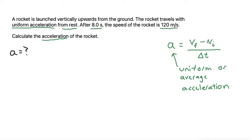In the acceleration formula, we have final velocity. It says after 8 seconds, 8.0 seconds, the speed of the rocket is 120 meters per second. We know it's traveling vertically upwards. A speed going vertically upwards is considered a positive speed. So this would be final velocity is 120, a positive 120 meters per second.